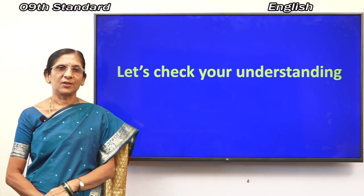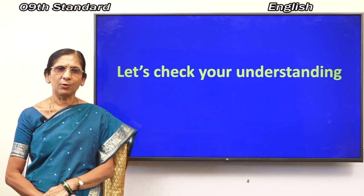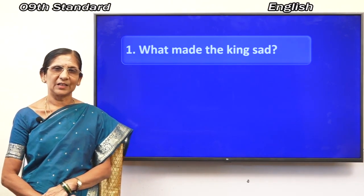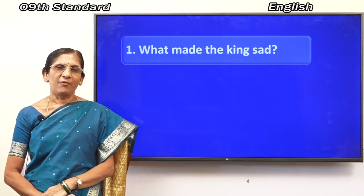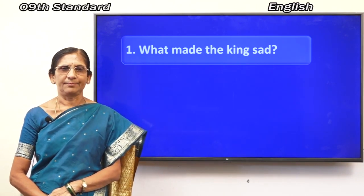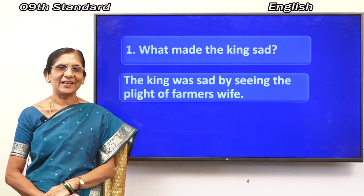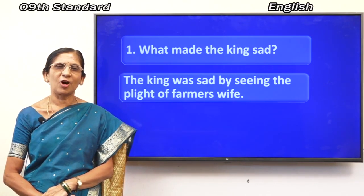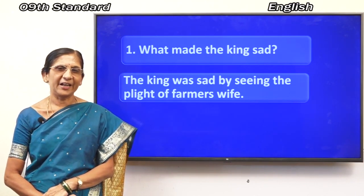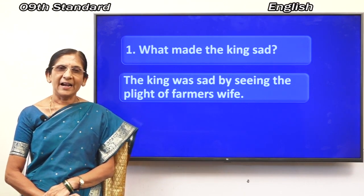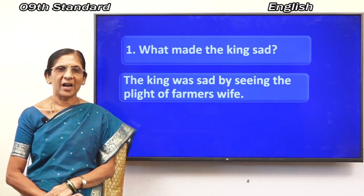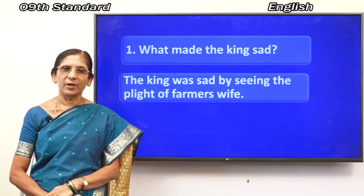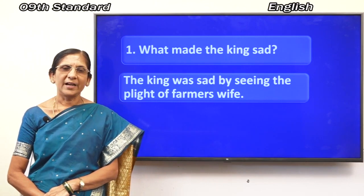Students, let's check your understanding. I am going to ask you a few questions. First question: what made the king sad? The king was sad by seeing the plight of the farmer's wife — the condition of the farmer's wife made the king sad. Very good, students — you have understood the first question and answer. Now let's move to the next one.